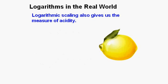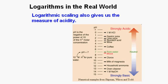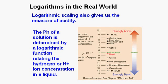Logarithmic scaling also gives us the measure of acidity. This is the pH scale. The pH of a solution is determined by a logarithmic function relating the hydrogen or H plus ion concentration in a liquid.